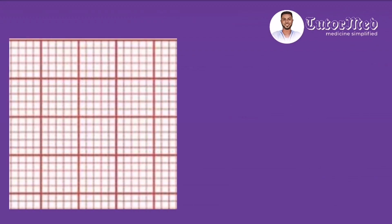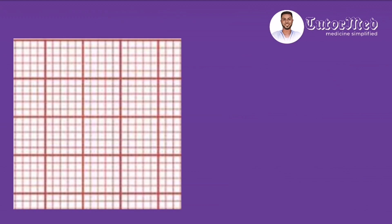Let's practicalize this concept using this diagram. Here is an ECG strip showing the big boxes, each with their five small boxes. If each small box is one millimeter high and one millimeter wide, then each big box should be five millimeters high and five millimeters wide.